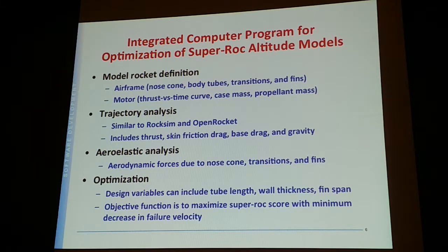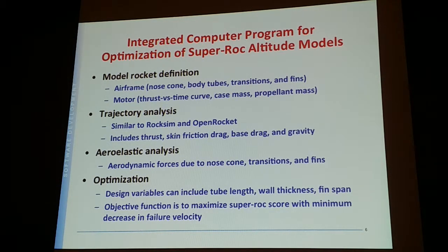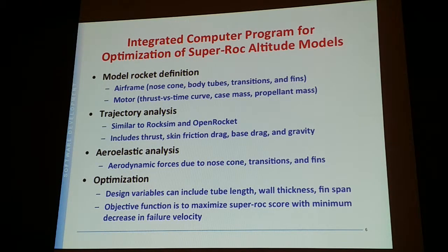You can change the diameter of the rocket, the wall thickness, and adjust the fin span. The optimization code looks at whatever design variables you provide and determines which ones work best. The objective is to increase the super rock score as much as possible without running into the failure velocity.